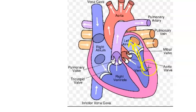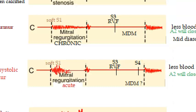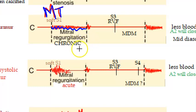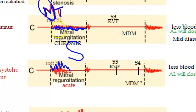Looking at this diagram, here you have S1 and S2. S1 is produced when there is closure of the mitral valve and tricuspid valve. After the mitral valve closes, blood flows back from the left ventricle to the left atrium. This produces a pan-systolic murmur in chronic mitral regurgitation, while in acute mitral regurgitation you see an early systolic murmur — but both are systolic murmurs.